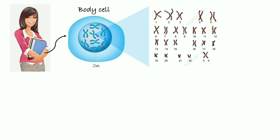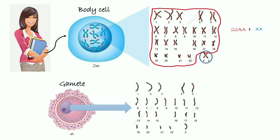Female body cell, a diploid cell contains 23 pairs of chromosomes. We write the chromosomes as 22AA, meaning 22 pairs of autosomes, plus XX, meaning a pair of gonosomes with the same size of chromosomes. Female gamete, a haploid cell contains 23 chromosomes. There is one type of gamete, which is written as 22AA, or 22 autosomes, plus X.